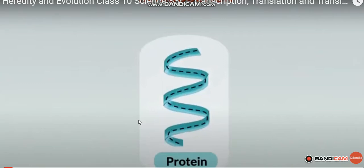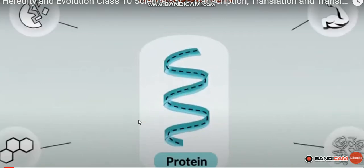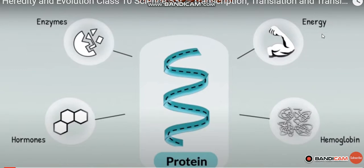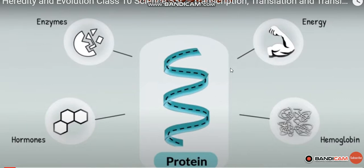Proteins are needed for the body processes — for energy formation, for hemoglobin formation, production of hemoglobin, production of enzymes, production of hormones. We can digest proteins from our energy.